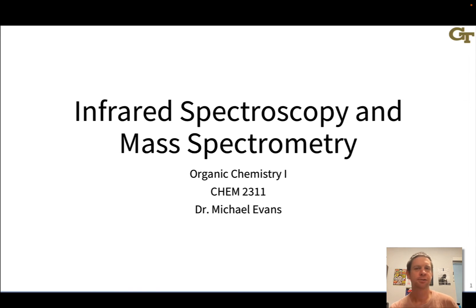In this unit, we're going to discuss infrared spectroscopy and mass spectrometry, two methods that give us information about the nature of functional groups and the mass of a sample of an organic compound.